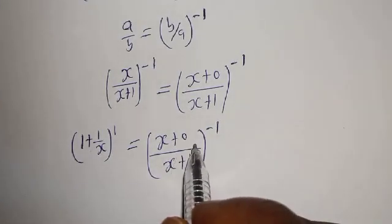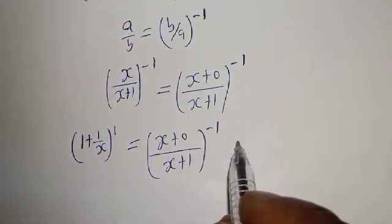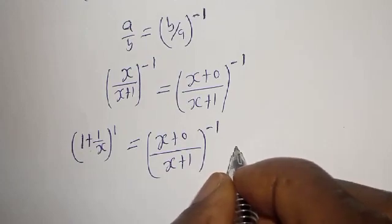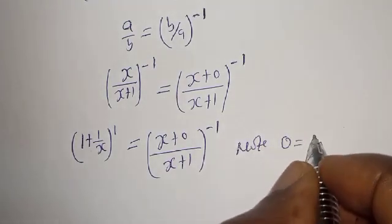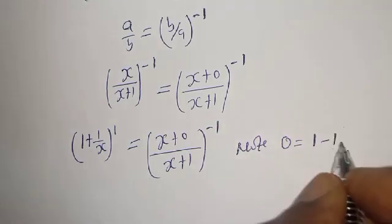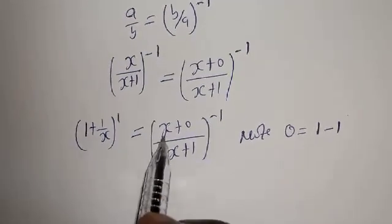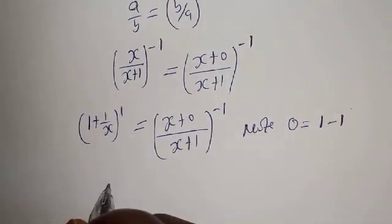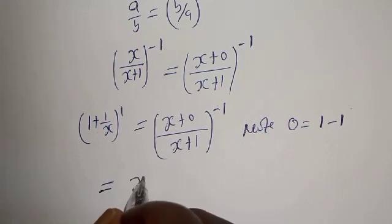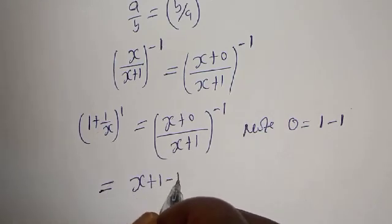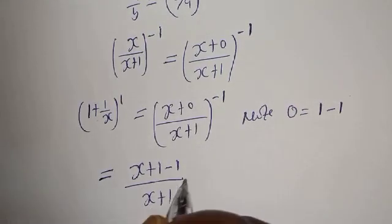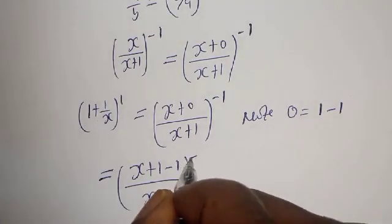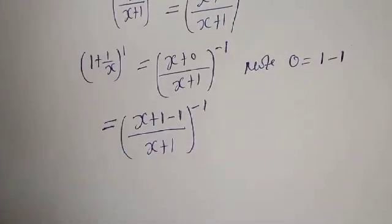Let's add 0 to the numerator. Note that 0 is equal to 1 minus 1. And if you substitute here, this is equal to s plus 1 minus 1 over s plus 1, to the power of minus 1.